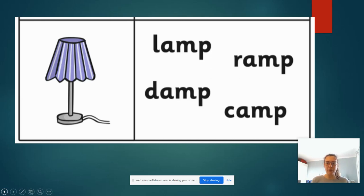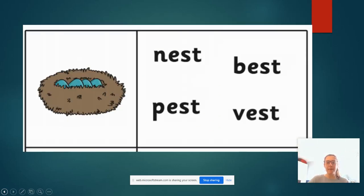So the words say we've got l-a-m-p, lamp. We've got r-a-m-p, ramp. We've got d-a-m-p, damp. And we've got c-a-m-p, camp. Now, I think that is a lamp. So let's see. Perfect. Well done if you picked that up. And that is the lamp.